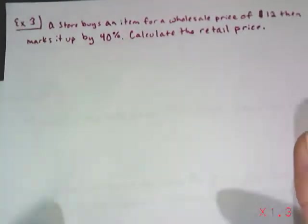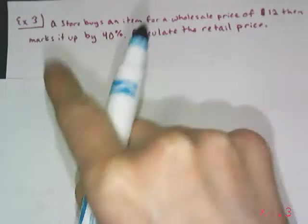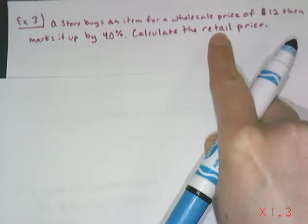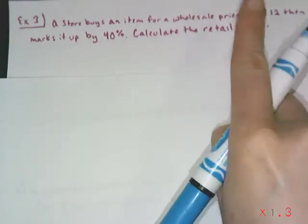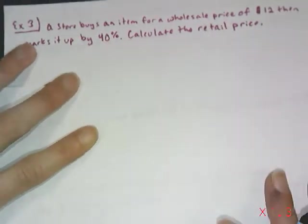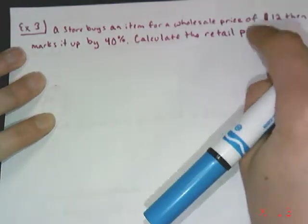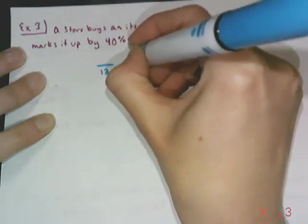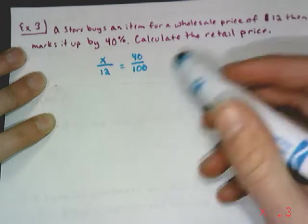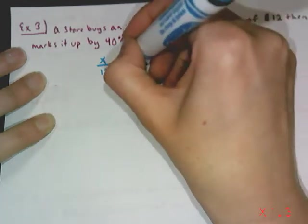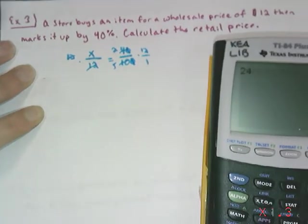In more context, say you have a store that buys an item for a wholesale price of $12. Then they mark it up by 40% to sell it back to you. I'm asking you to calculate the retail price, what you're paying in the store. You can find how much the markup is by doing a percent proportion. Of $12 goes here, 40% goes over 100. We're calculating how much 40% is of 12. Simplify to 2/5, input the 12. So 2 times 12 divided by 5 is 24 divided by 5.